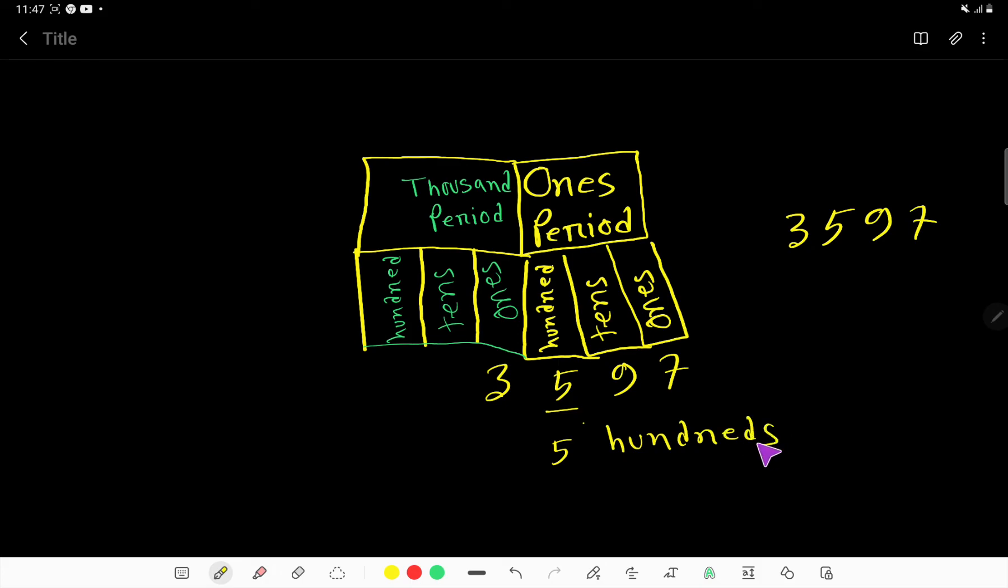Or you can express it like this: five times hundred, that is five hundred. So in our first method we write five and then add a zero for every digit, 500.